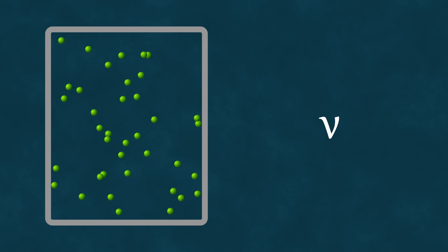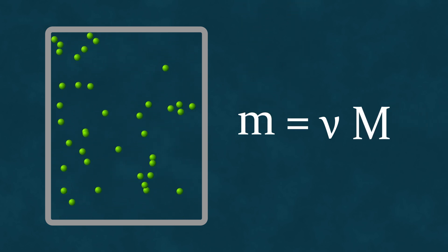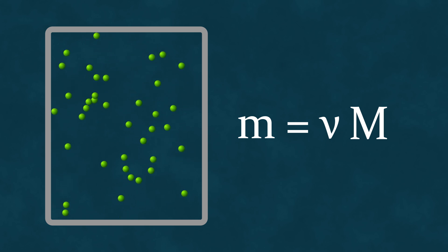That said, each molecule has a mass, which, in the case of a pure substance, is identical. Additionally, in classical physics, mass is an additive quantity, meaning that the mass of a system consisting of several objects equals the sum of the masses of those objects. Specifically, the mass of a given quantity of substance can be determined using the formula where nu is the amount of substance and m capital is its molar mass, a characteristic of the given substance.